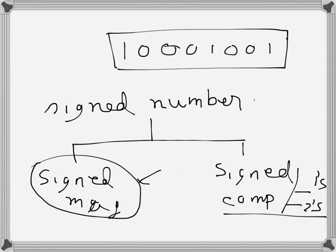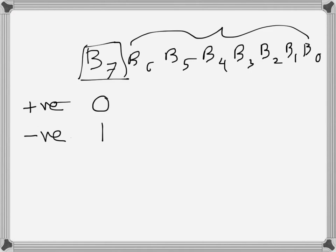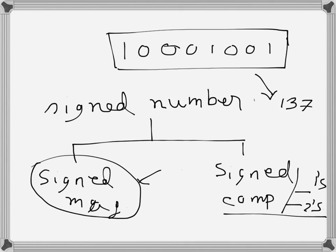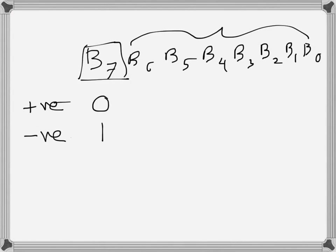Consider the number 10001001. If it were an ordinary unsigned binary number, the equivalent decimal value is 137. However, if this is a signed magnitude representation number, then the most significant bit is reserved for the sign. Since that bit is one, the number is negative, and the remaining seven bits represent the magnitude, which is 9. So the value becomes minus nine.